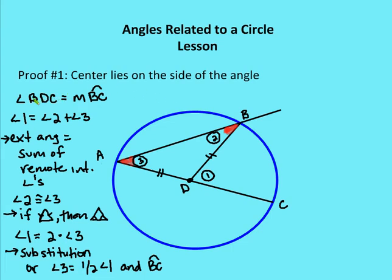Let's start with the proof. I want to prove that two times the measure of angle BAD is going to be equal to arc length BC. The measure of angle BDC — this is the central angle — is equal to the measure of arc BC. We've already defined that the arc length equals the central angle. I can also say that angle one is going to be equal to angle two plus angle three, because the measure of an exterior angle equals the sum of the remote interior angles.